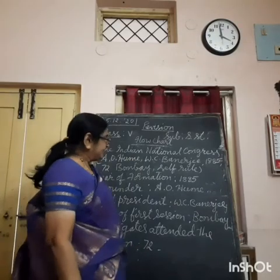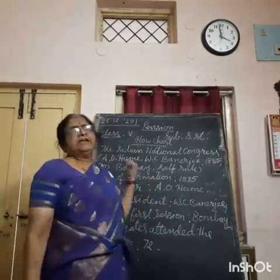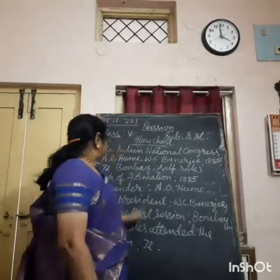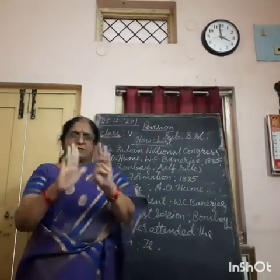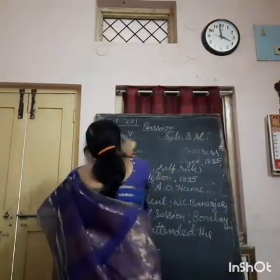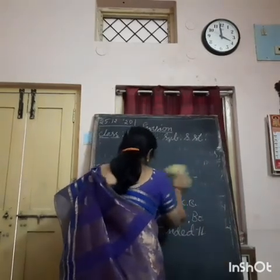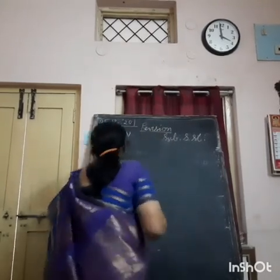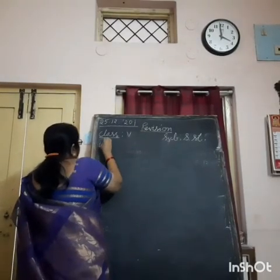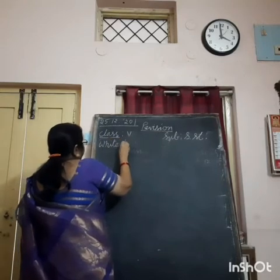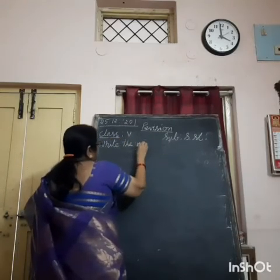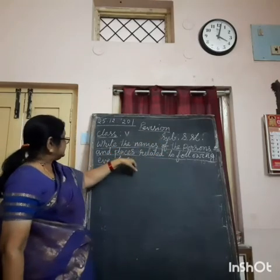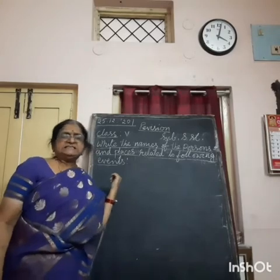This is how you are going to write the flowchart. I am going to give you this in a typed manner. So this is one topic. The second topic is about how you are going to write the names of persons and places related to the following events.